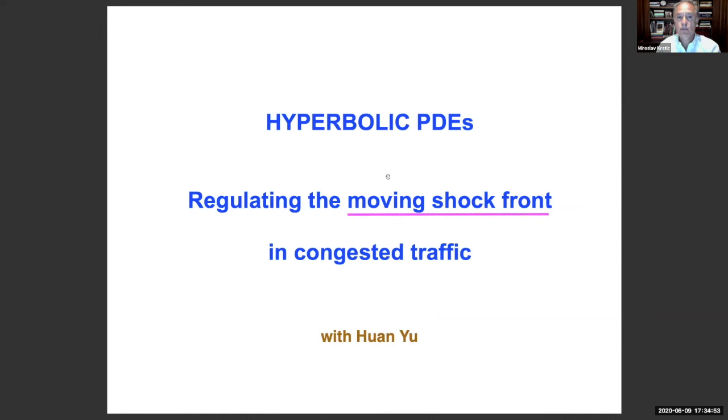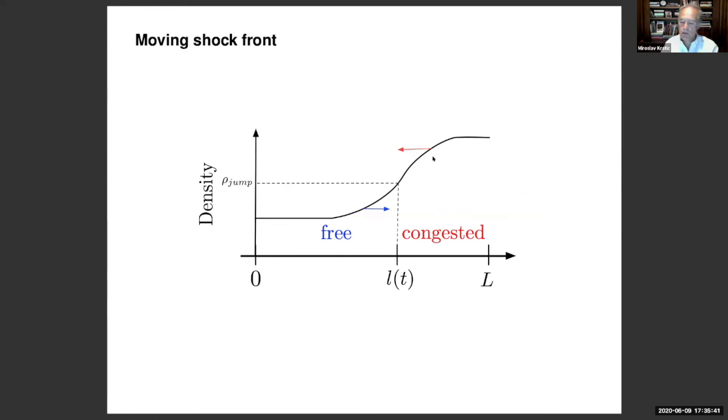Let me now switch from this parabolic discussion to a hyperbolic discussion. So this is work by Huan Yu, and it relates to an application in control of traffic flows in the congestive regime. One has many results on the topic of congestive traffic. And most of them involve multiple coupled first-order hyperbolic PDEs, which model the density and the velocity and fall into the category of Aw-Rascle-Zhang models. This particular topic is not of that kind. This particular topic is just a single hyperbolic PDE model of the so-called LWR type, but let me start by describing the traffic with this simple diagram.